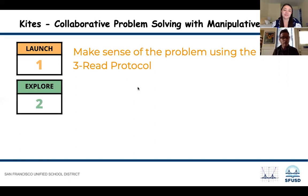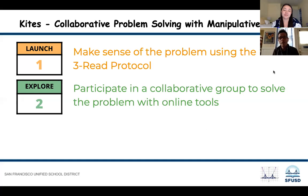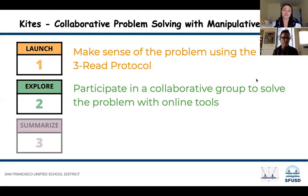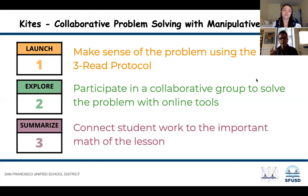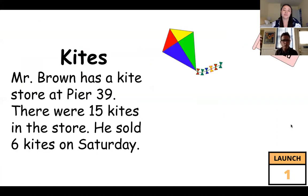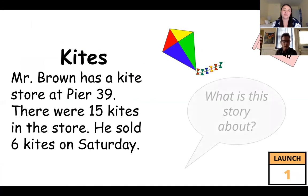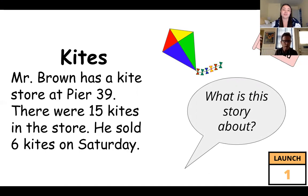The explore is where you participate in collaborative groups to solve the problem with online tools. The last part is the summarize, where students talk about the work they did, connect each group's work to other groups', and to the important math of the lesson. In the first read, which the teacher typically reads aloud, you ask: what is this story about? The story is: Mr. Brown has a kite store at Pier 39. There are 15 kites in the store and he sold six kites on Saturday. In the first read you talk about what it's about.